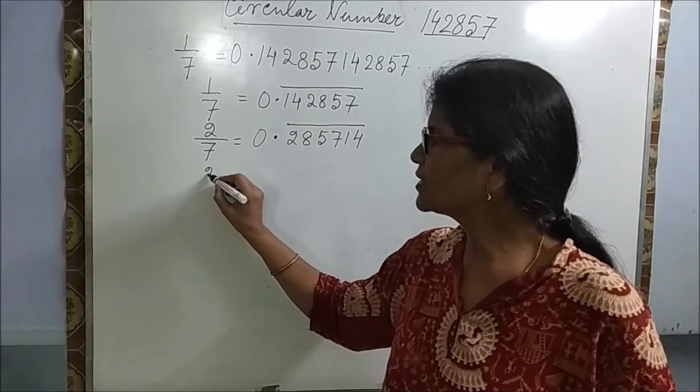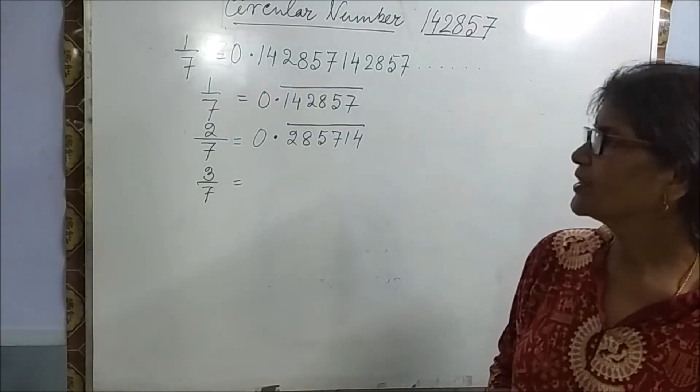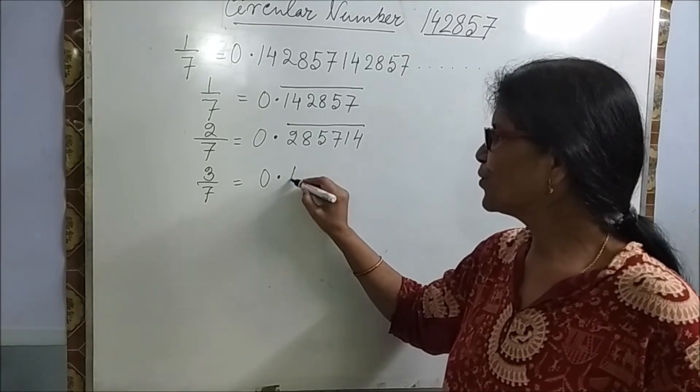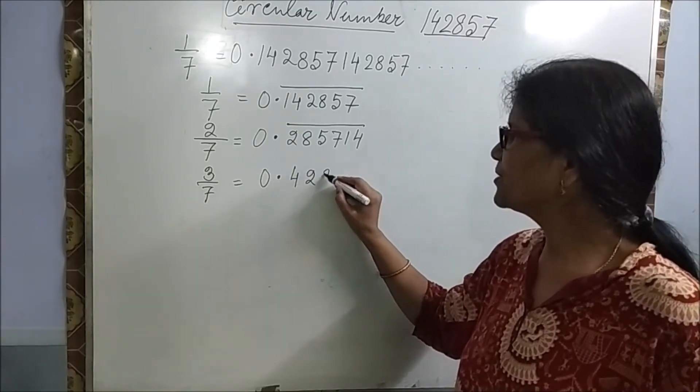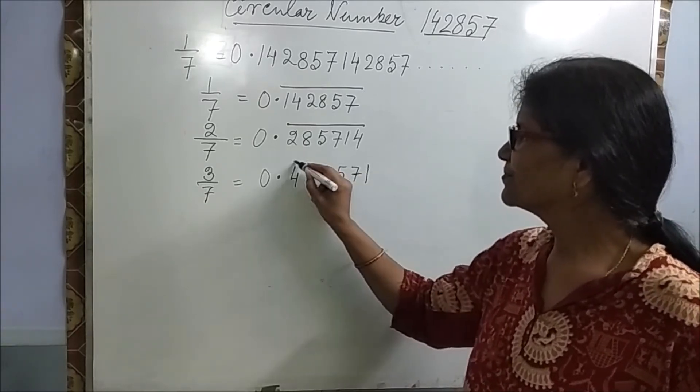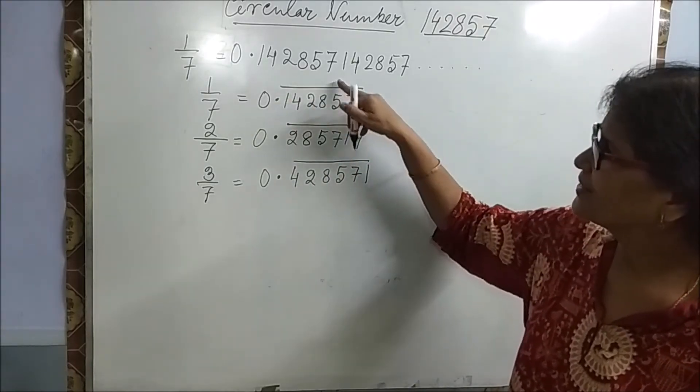If I want 3 by 7, it will be, guess, 0.428571. See all the digits are here only. Here only.